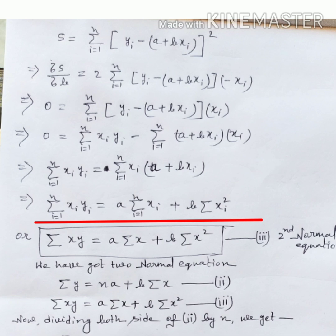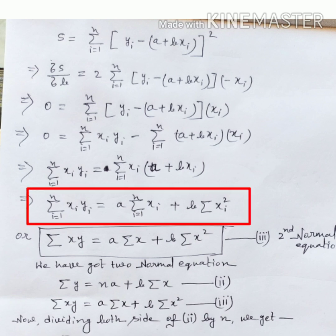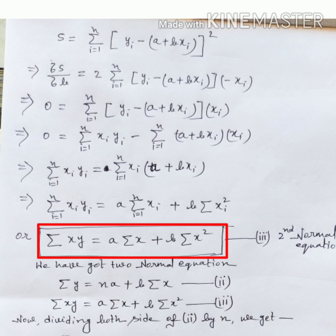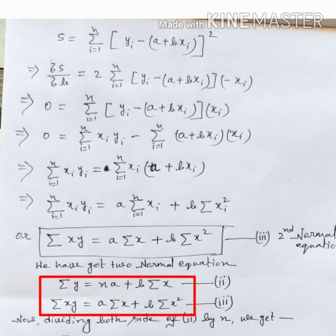Since a and b are constants they are kept outside the summation. This gives the second normal equation, written in general form as: Σxy = a·Σx + b·Σx². So we now have two normal equations: (1) Σy = na + b·Σx, and (2) Σxy = a·Σx + b·Σx².